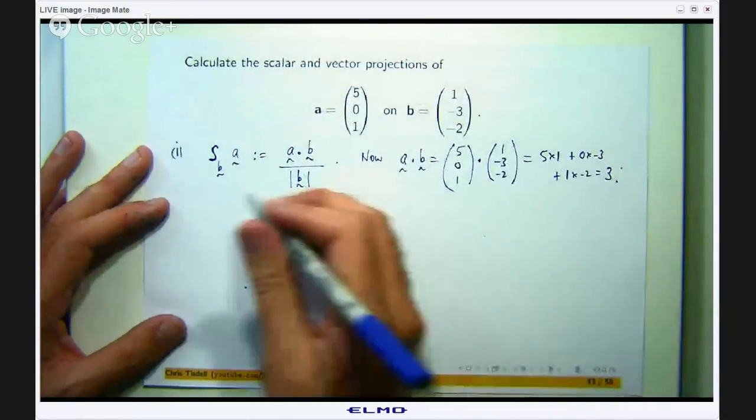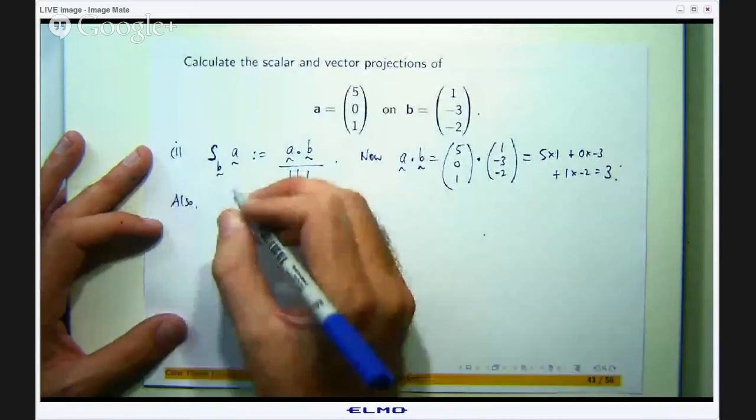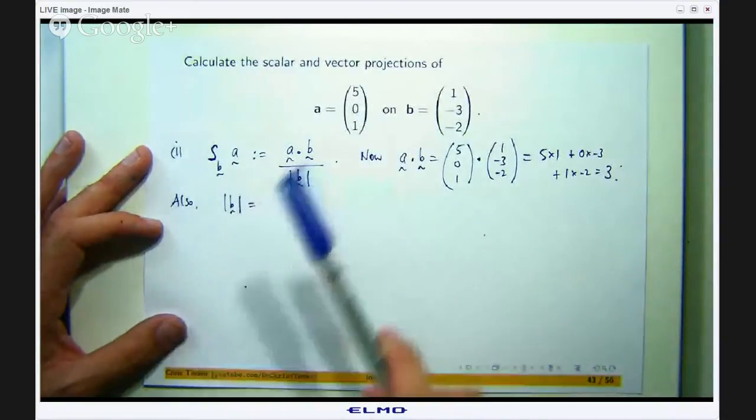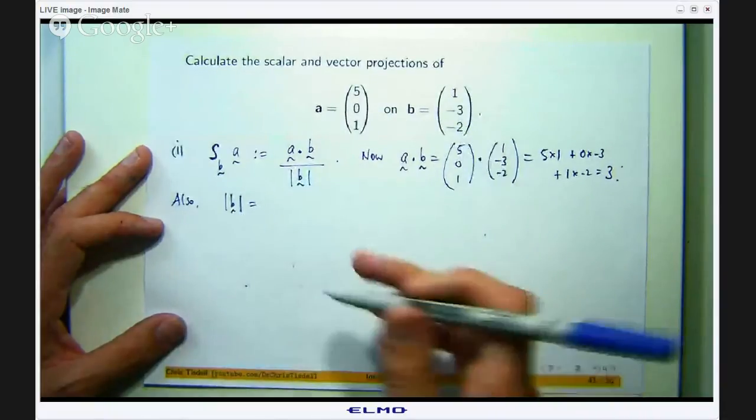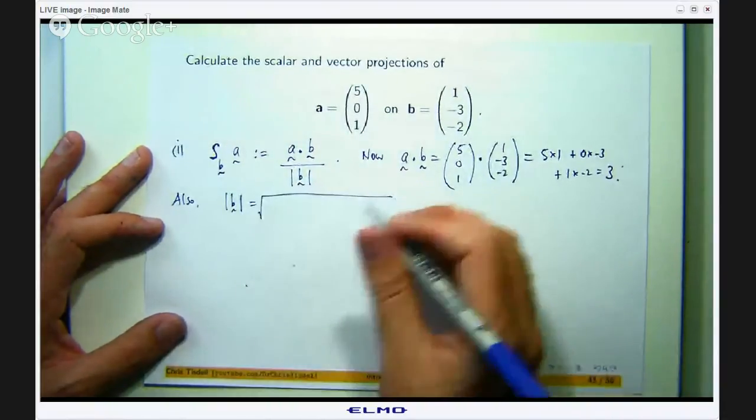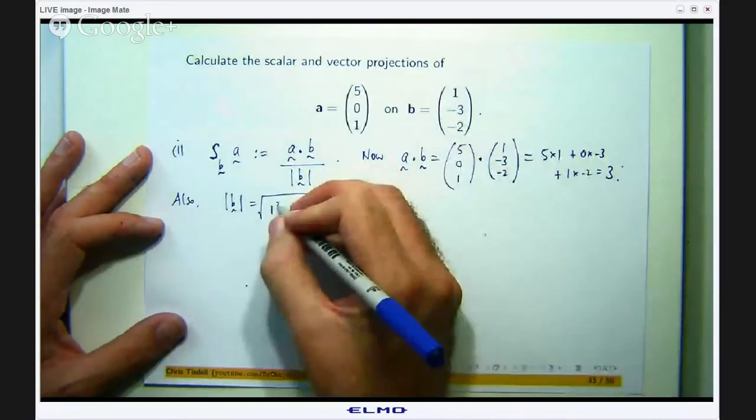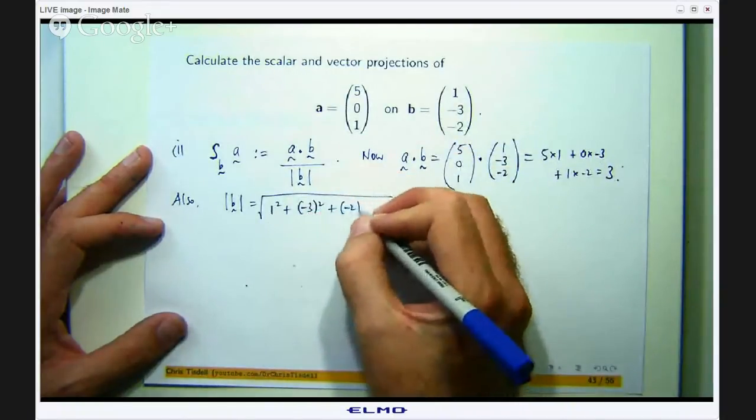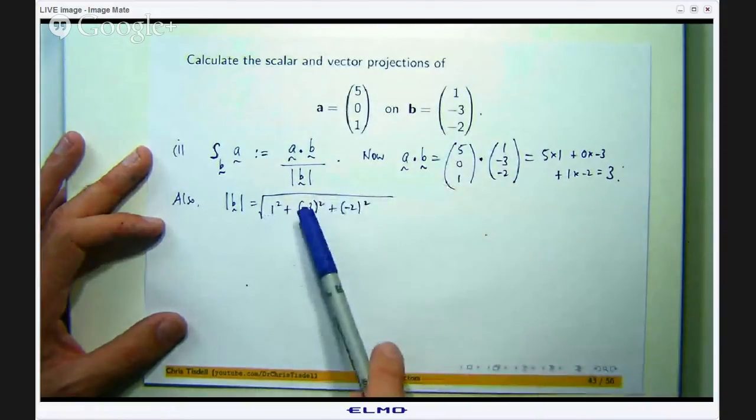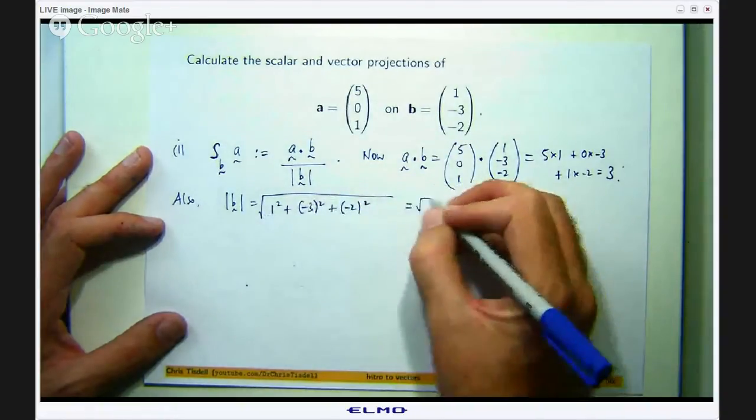Well that will be 0, that will be negative 2 and that will be 5, so I will get 3. Let us work out the length of B. How do I compute the length? I take the components, I square them, add them together and take the square root. So 1 plus 9 plus 4, root 14.